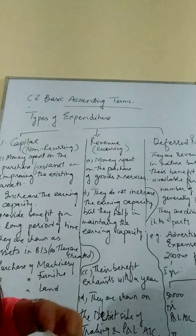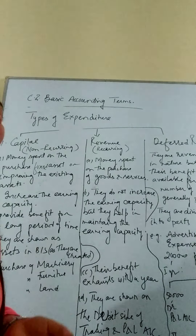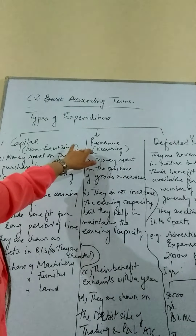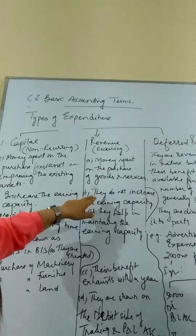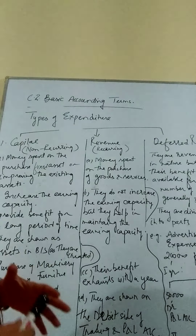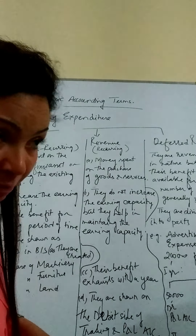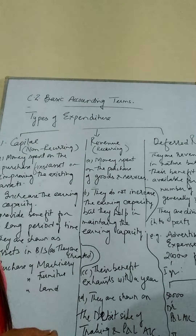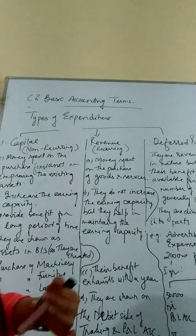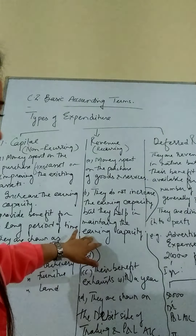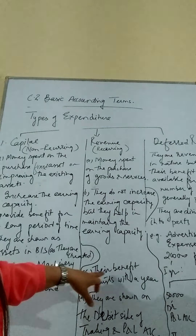You purchase raw material or goods, process it, and sell it. Money spent on the purchase of goods and services in the normal course of business is considered revenue expenditure. They do not increase the earning capacity; rather, they help in maintaining the existing earning capacity. For example, if you purchased machinery, the machinery increases your earning capacity. But if you are doing oiling or repairs of the machinery, oiling and repairs which are regularly required will be considered revenue expenditure.